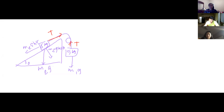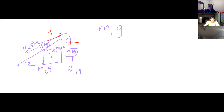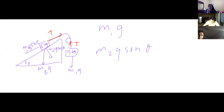For this, we have to see if m1·g is greater or less than m2·g·sinθ. So we need to find m1·g and then m2·g·sinθ. m1 is 5 times 10, so that's 50. I'm confused because I switched the ones and twos earlier, but m1 gives us 50.